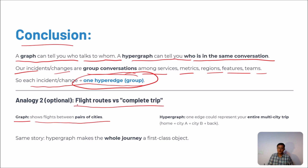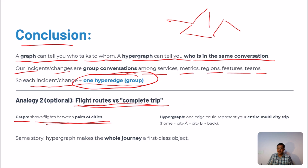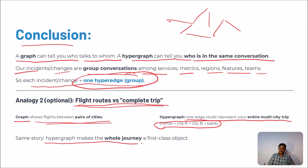Let us go through another analogy: a flight graph versus a complete journey. When you use a graph, it shows flights between cities creating a complete map of individual connections — here to here, here to here. But a hypergraph represents your entire multi-city journey — home to city A to city B and back home — as one hyperedge. This makes your whole journey a first-class object, allowing you to see what is happening more effectively, rather than just individual city-to-city jumps.